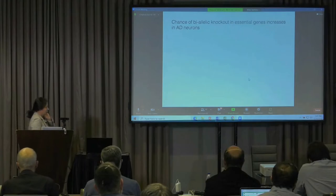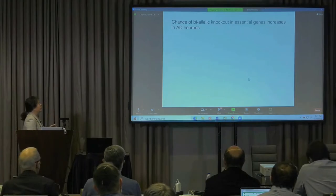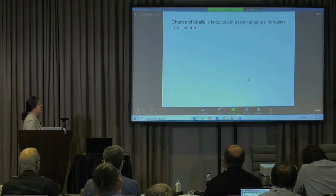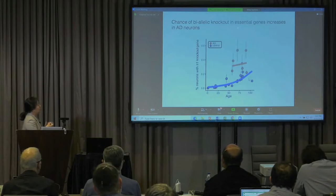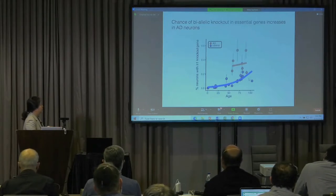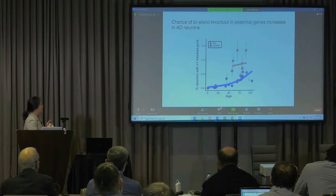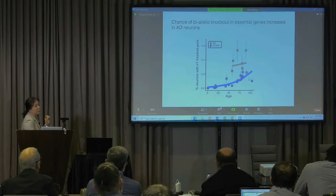What are the functional consequences of these mutations? One idea we have is that with increased mutation burden, there is a higher chance of biallelic knockout of essential genes that can lead to cell death. This figure shows the percentage of neurons with at least one knockout gene. With the increased AD somatic mutation burden, we will have a much higher chance of having neurons with knocked-out essential genes.